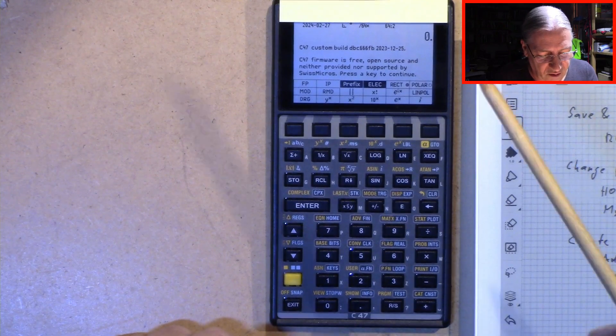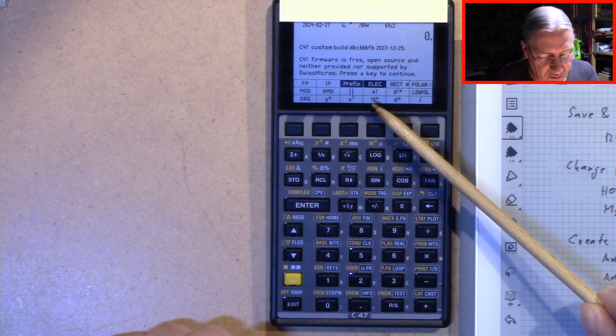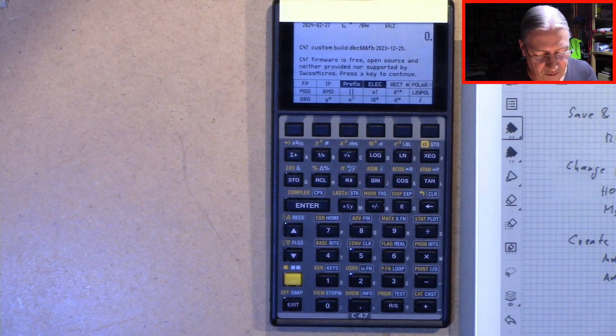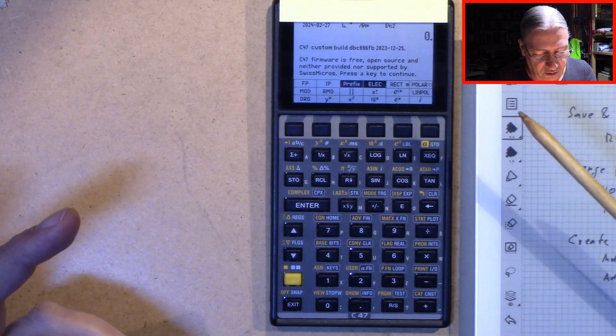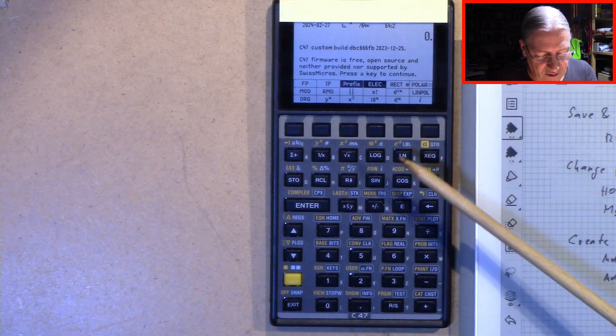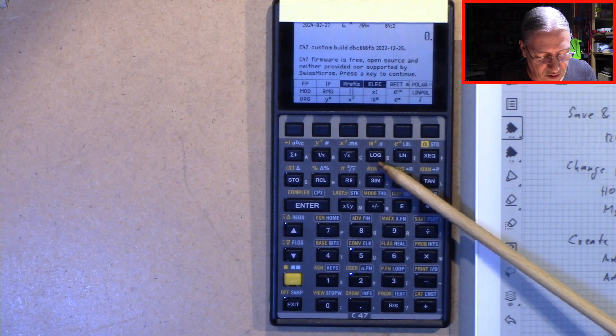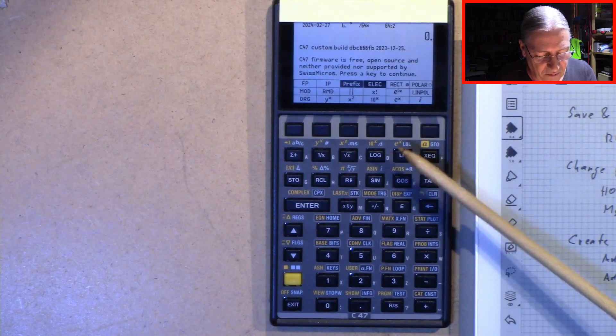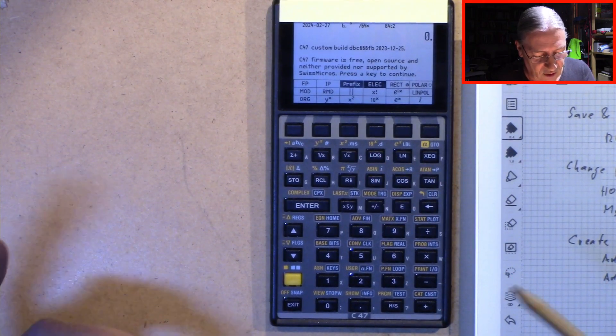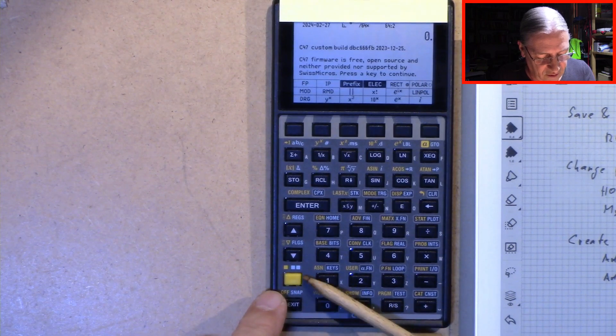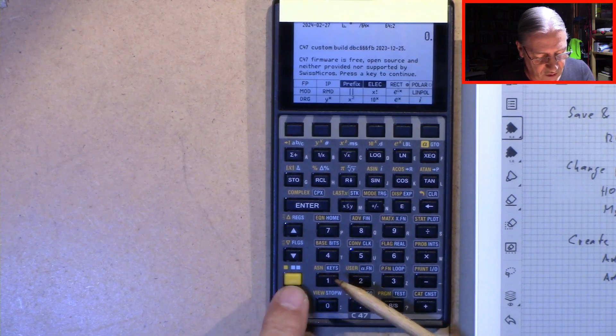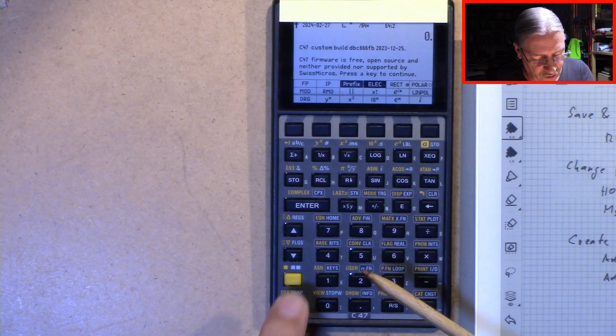Let's say we have here the function 10 to the power of x. And we would like to change this against the logarithm function here, log function. Then we have to press assign, which is reached by 1. Shift click.